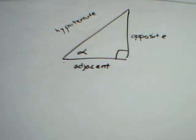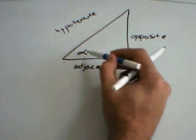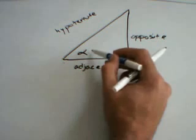When we think of right triangle trigonometry, we want to think in terms of sides and angles. Here, we have one angle labeled as alpha.